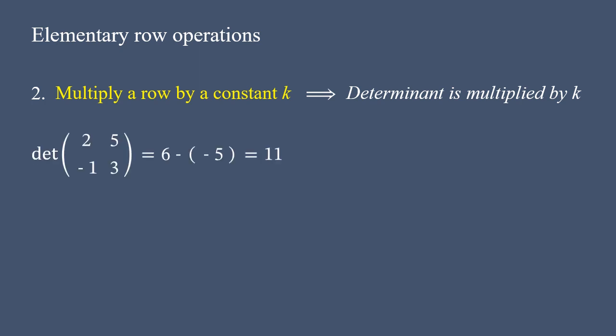Let's consider the next property. If a matrix row is multiplied by some constant, then the value of determinant also should be multiplied by the same constant. Let's take the same matrix. We have already evaluated its determinant, which is 11.